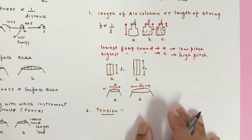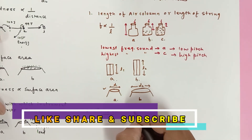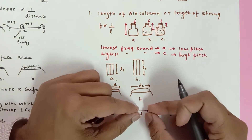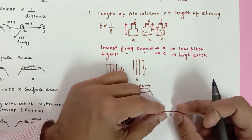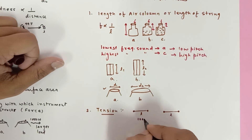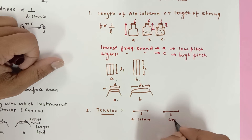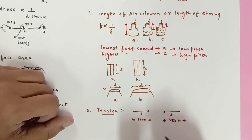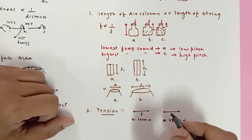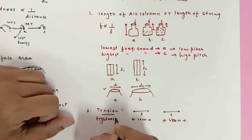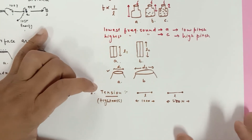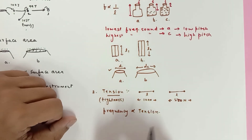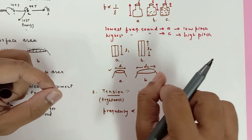The second factor is tension. Tension is a type of force generally found in strings. Take two strings of equal length L. If one is pulled with 100 newtons and the other with 500 newtons outward, the second string is under more tension — meaning it is tighter. Frequency is directly proportional to tension. That's why guitar knobs, when tightened, produce a higher frequency sound.